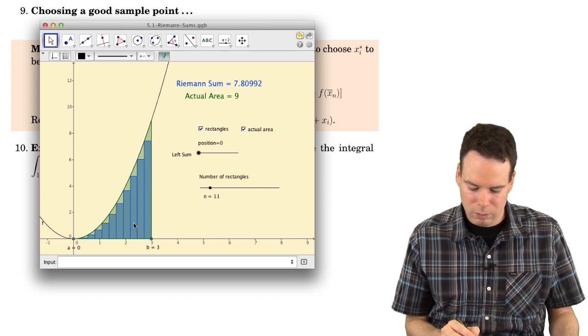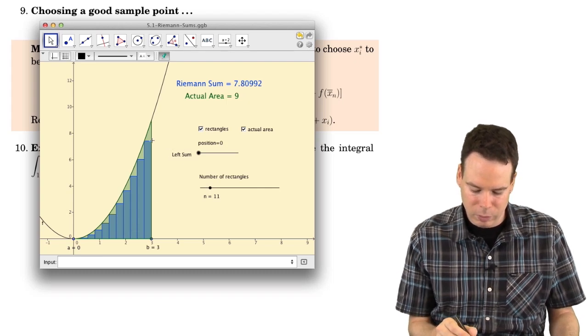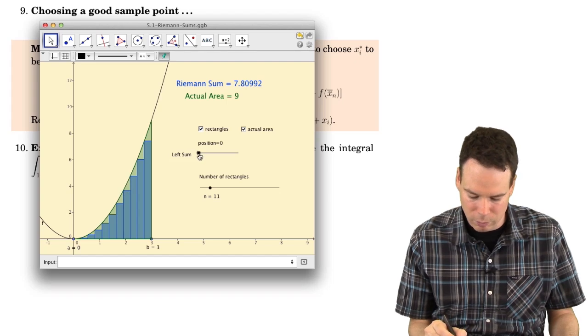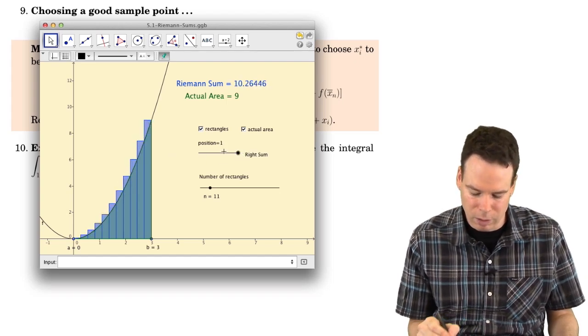If we look at using a left-hand sum, we see that there's lots of gaps. We're undershooting it all the way along here, whereas if we use a right-hand sum, again we're overhanging by quite a bit.